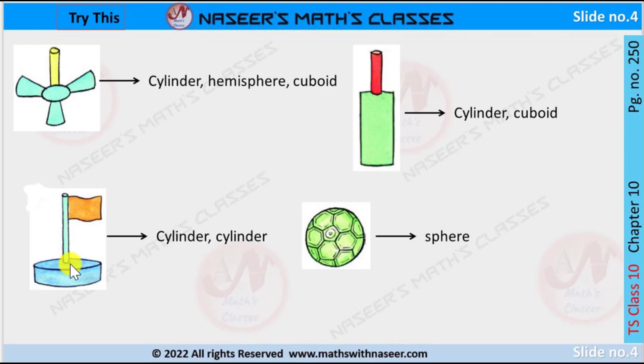Next to this, flag post is divided into cylinder. Its base also in the shape of cylinder. The football in the shape of sphere.